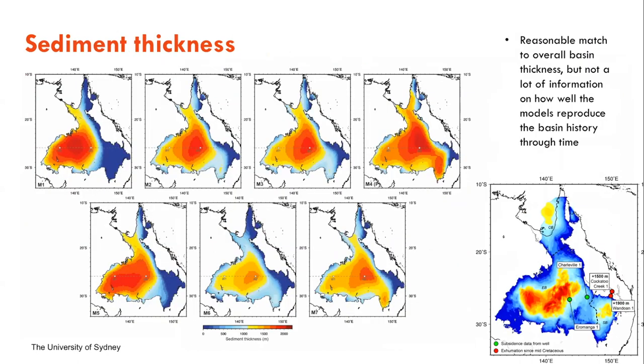Overall, sediment thicknesses are reasonable between the models. For models where we just tested the sea level without any dynamic topography applied, we, as expected, got very little deposition in the basin - that's these two down here. Whereas all the other models are giving us a very similar sediment thickness.